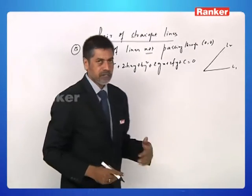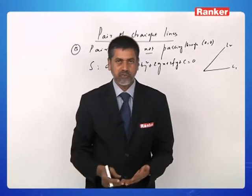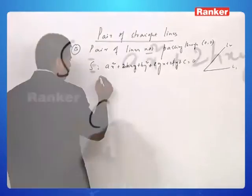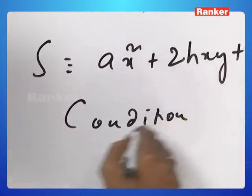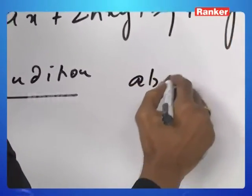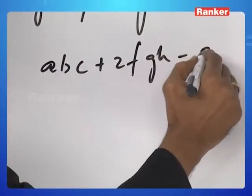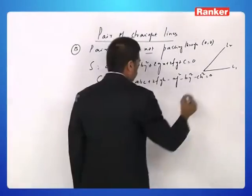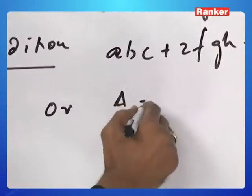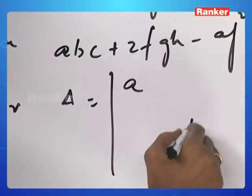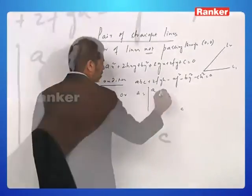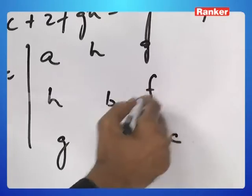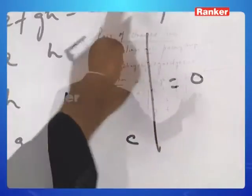Such a generalized equation can represent many things depending upon the relation between coefficients, but this will represent a pair of lines if a certain condition is satisfied. That condition is abc plus 2fgh minus af squared minus bg squared minus ch squared equals 0, which can also be put in the determinant form: determinant with a, h, g, h, b, f, g, f, c on the diagonal symmetrically. This will produce the same thing.